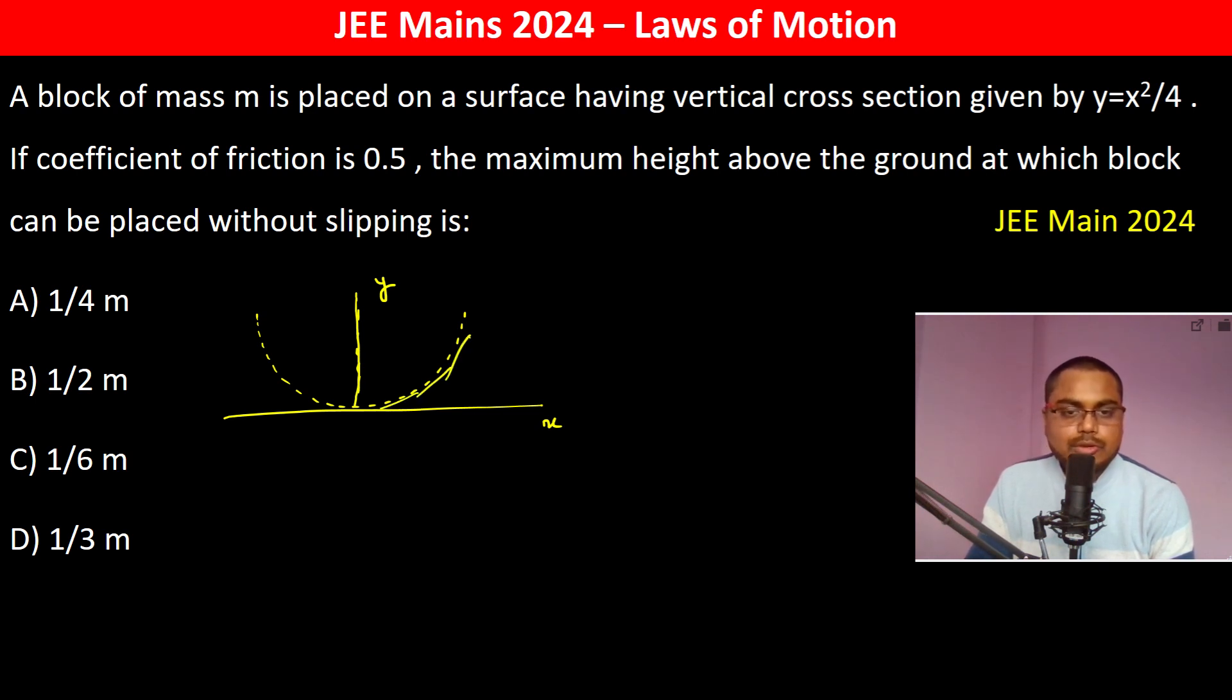If you look at the slope, the slope will increase. So y is equal to x square by 4. So dy by dx is equal to 2 into x by 4 which is equal to x by 2. So just as x increase, the slope is going to increase.